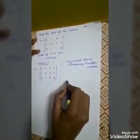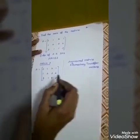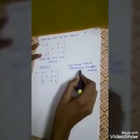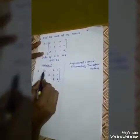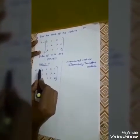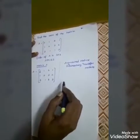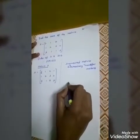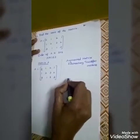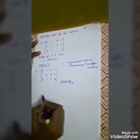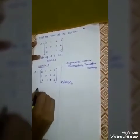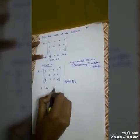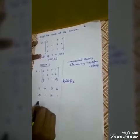For elementary transformations, a key tip is: if the first element is 1, the process will be easy. Here R2 has a 1 as its first element, so I am doing R1 interchange with R2. After interchanging, R1 becomes [1, 2, 3, 2], R2 becomes [0, 1, 2, 1], and R3 stays [3, 1, 1, 3].